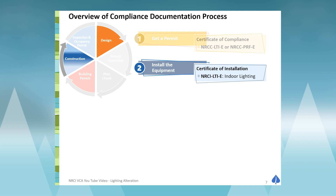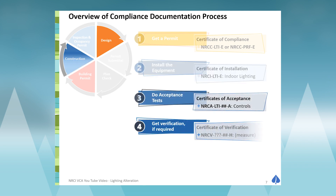The Certificate of Installation Form is used by the contractor out in the field, verifying that what they installed meets the minimum promise of the Certificate of Compliance Form. What's exciting about this new compliance process is the Certificate of Installation Form will actually inform the contractor what is required for their scope of work.